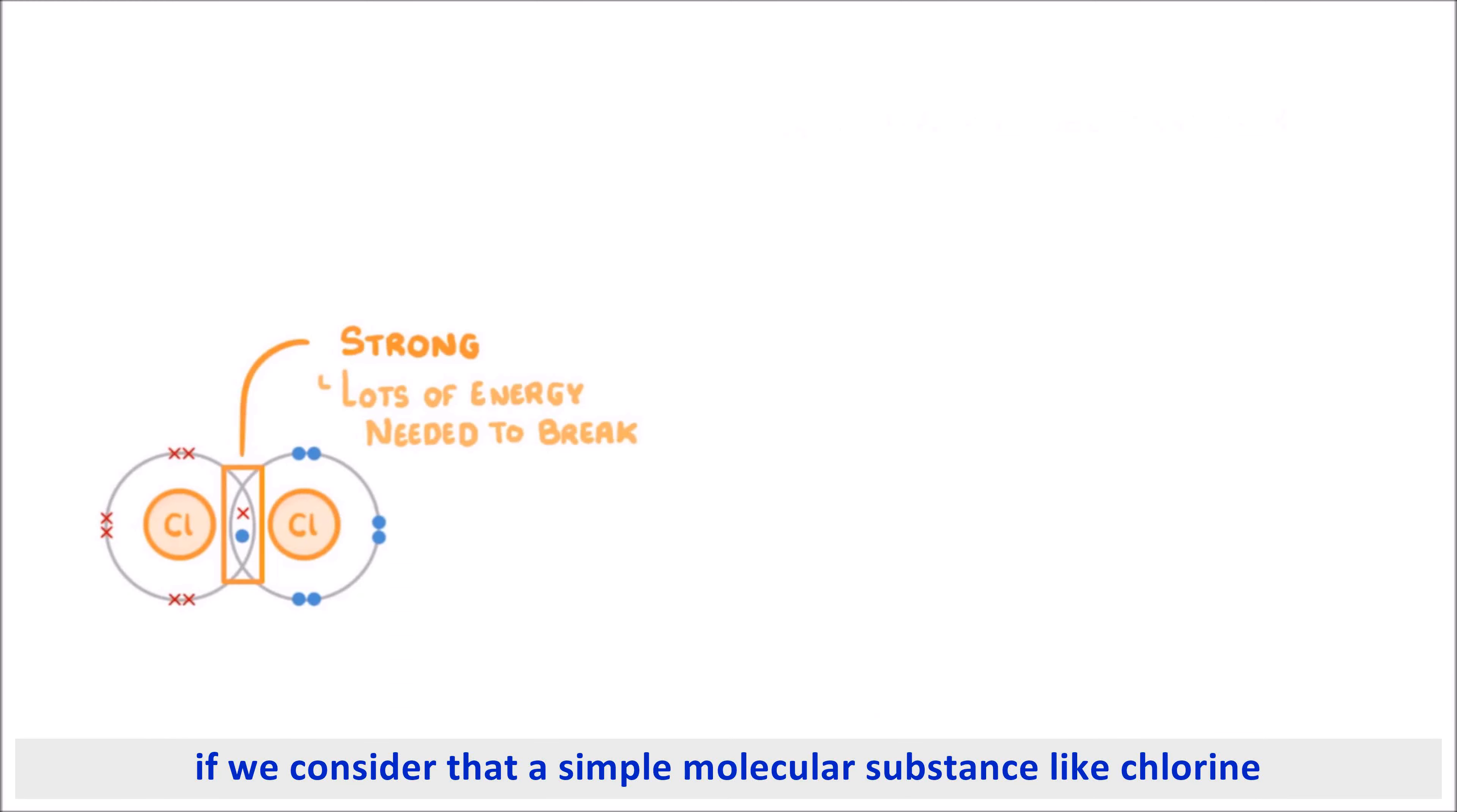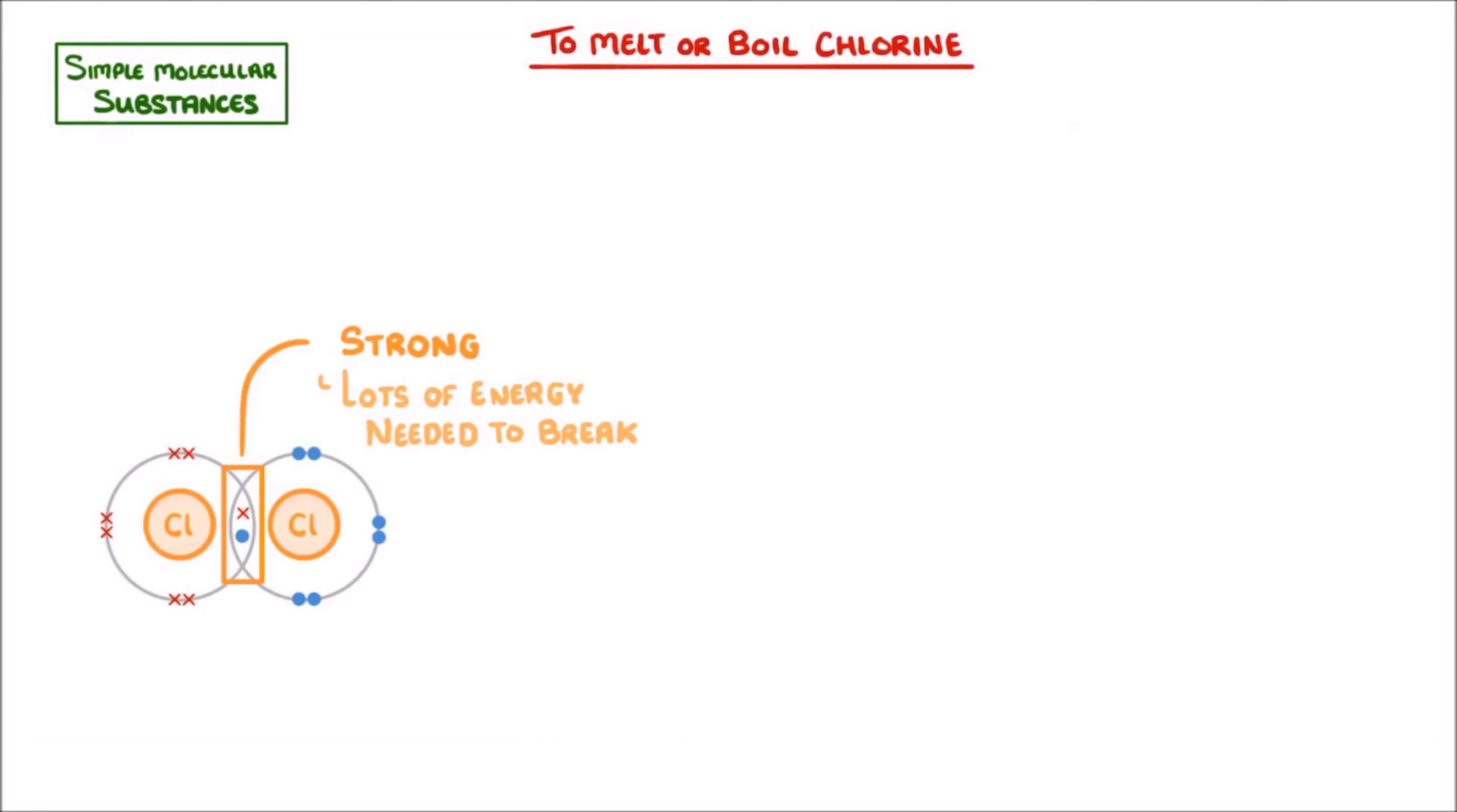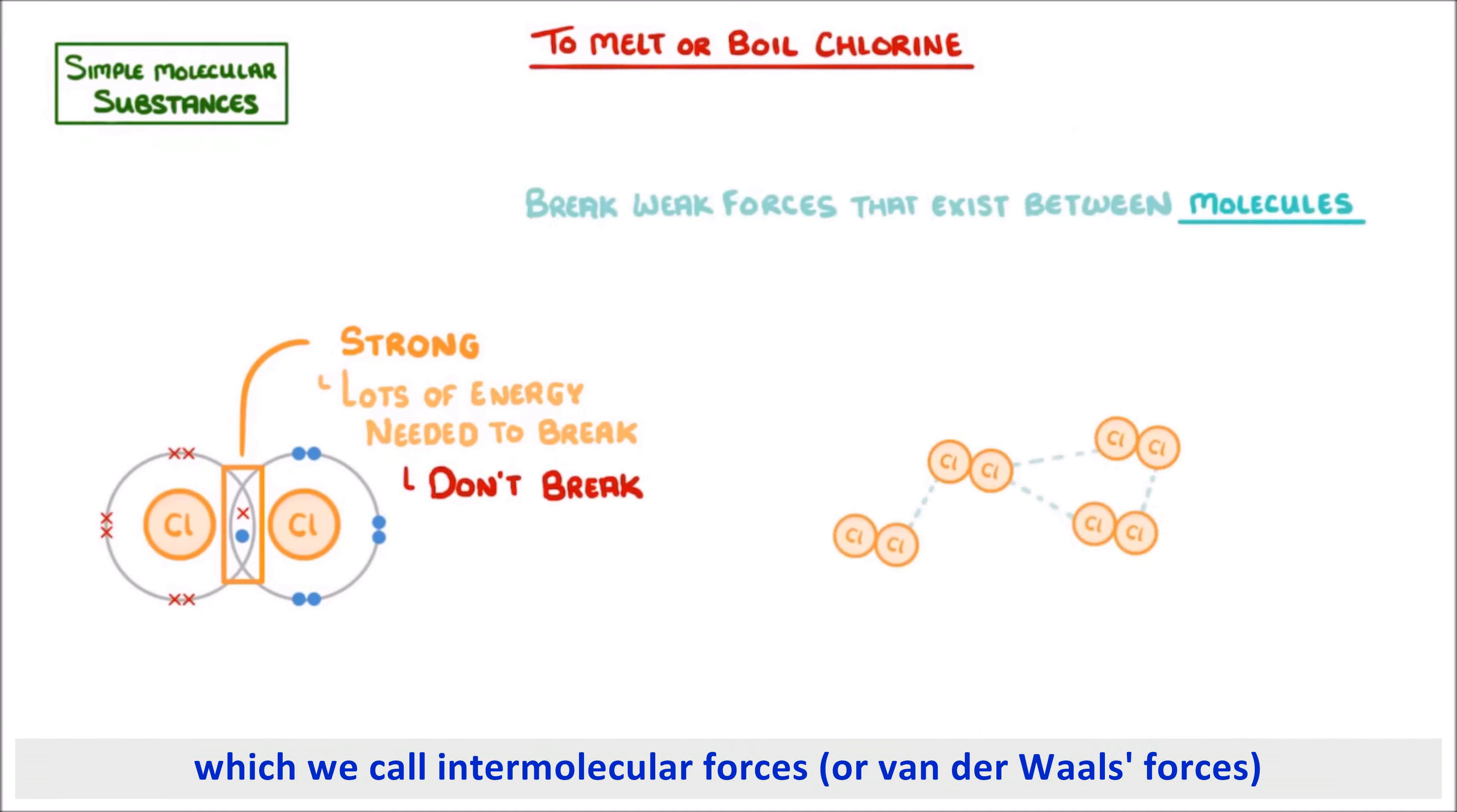So if we consider a simple molecular substance like chlorine, the atoms within each molecule will be strongly bonded together. However, in order to melt or boil chlorine, we actually don't break these strong covalent bonds. Instead, we only need to break the weak forces that exist between different molecules, which we call intermolecular forces.